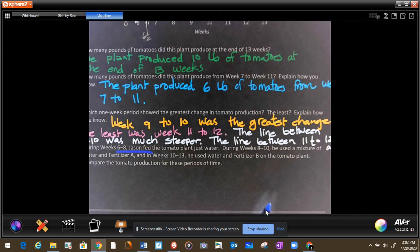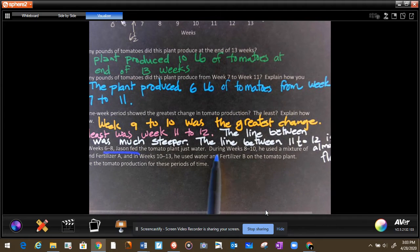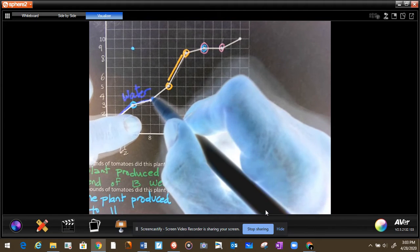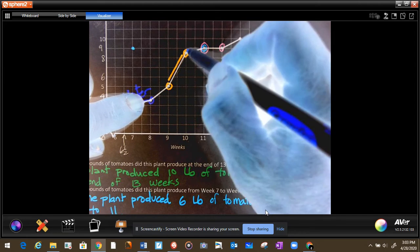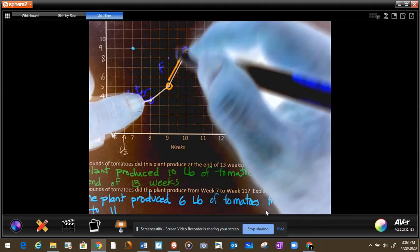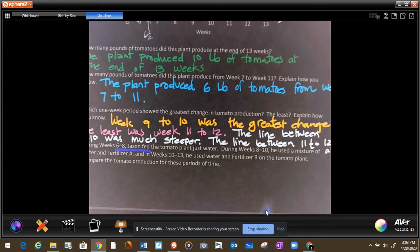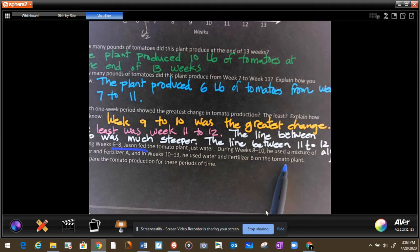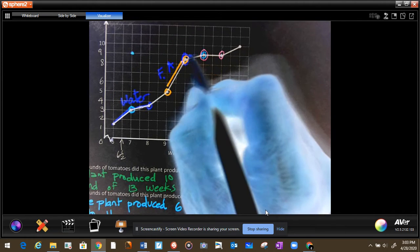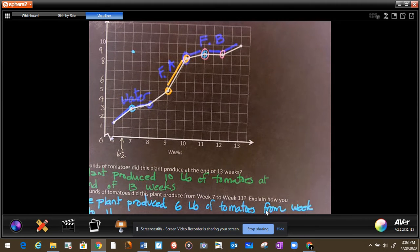And let's look at the next piece of information. During weeks 8 and 10, he used a mixture of water and fertilizer A. So from 8 to 10, which is this one here, he used water but he also put fertilizer A. Our next piece of information is he used fertilizer B on the weeks 10 and 13. So from here, this part and this part, he only used fertilizer B.